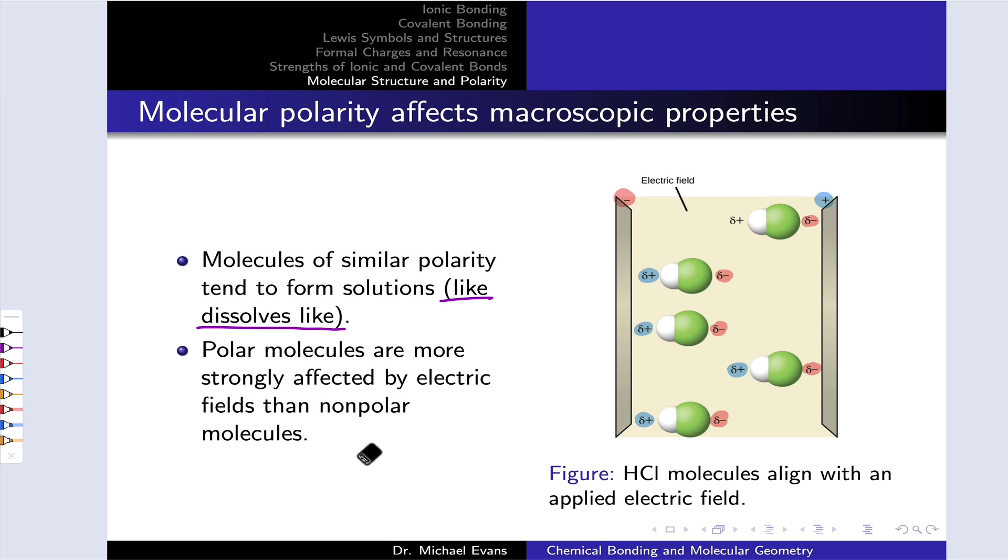You can place polar molecules in an electric field and they will be affected by that electric field. They will orient themselves in that electric field. We're seeing that here. These HCl molecules are aligning themselves so that their positive ends are near the negative plate of this capacitor, while their negative ends are near the positive plate of the capacitor when an electric field is applied across the capacitor.